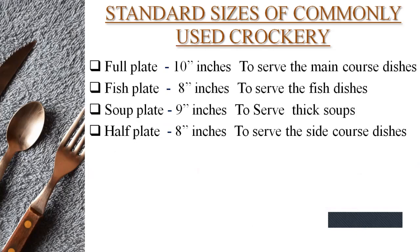Now, the next is standard sizes of commonly used crockery. The full plate — another name is large plate — has a size of 10 inches, which is 25 centimeters, and is used to serve the main course dishes. The fish plate is 8 inches, used to serve fish dishes. The soup plate is 9 inches, used to serve thick soups. The half plate is 8 inches, used to serve side course dishes.